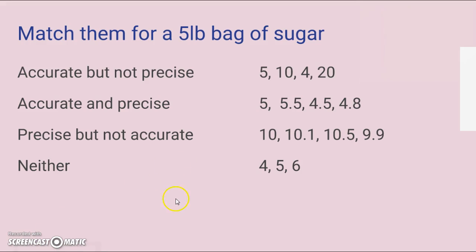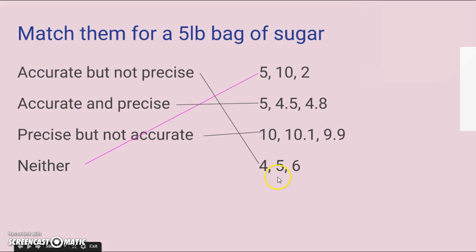So now let's do this numerically. Match them for a five pound bag of sugar. Which measurements would be accurate but not precise? Accurate and precise? Precise but not accurate? Or neither? Hit pause and match them up. Accurate but not precise: four, five, six - that's pretty close to five. Accurate and precise: five, four and a half, four point eight - real close. Precise but not accurate: they're in a group - ten, ten point one, nine point nine - but they're not accurate. And neither: five, ten, two - they're all over the place.